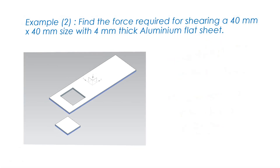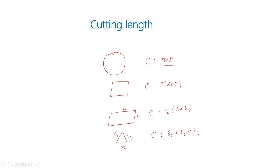The cutting length depends on the shape of the profile. For a circular object: C = π × diameter. For a square: C = side × 4. For a rectangle: C = 2 × (length + width). For a triangle: C = side1 + side2 + side3. For any complex profile, we can use other geometrical calculations or CAD software to calculate the complete cutting length, and from that we calculate the vertical force.